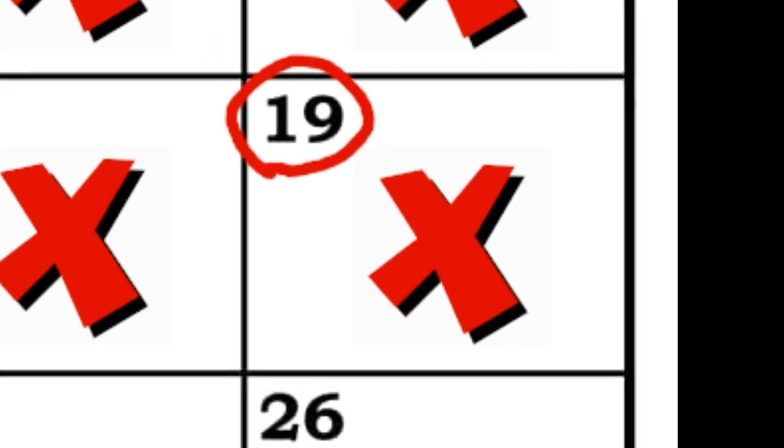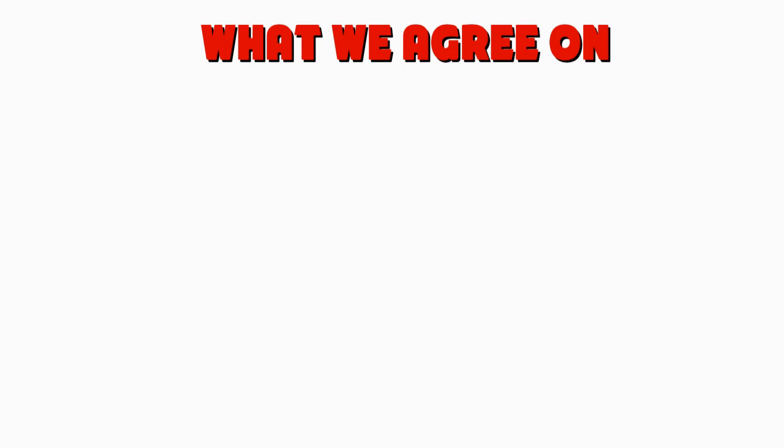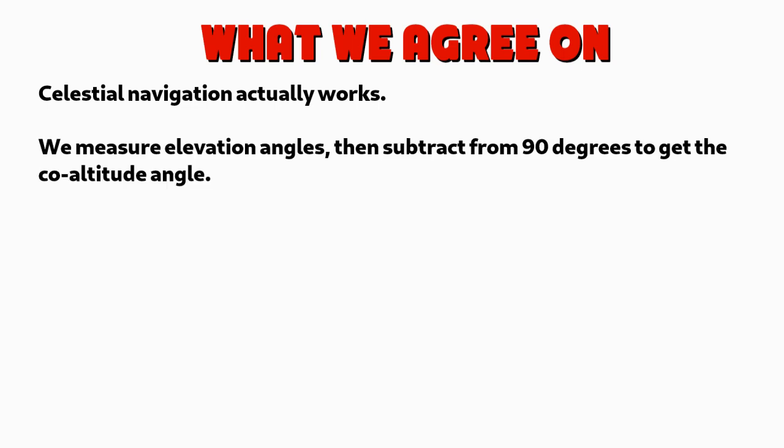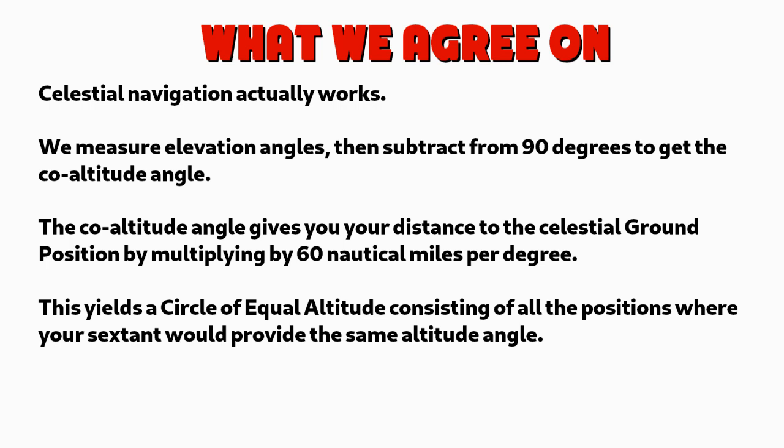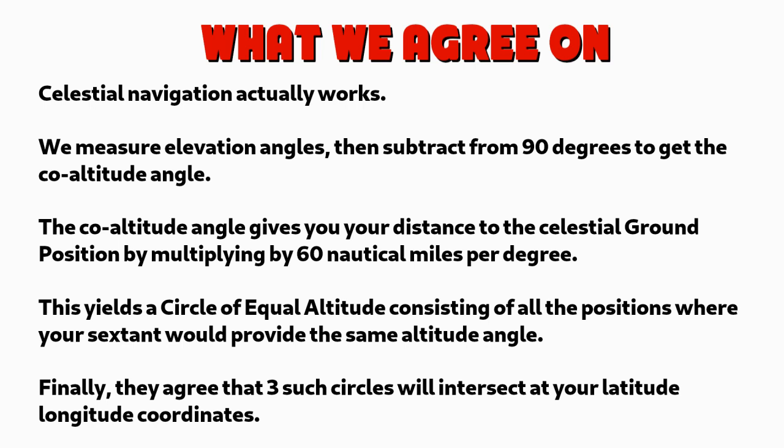They've certainly talked about it a lot and even agree on a few important points. Specifically, that celestial navigation actually works and has been used by mariners successfully for centuries. That it works by obtaining elevation angles to celestial bodies, like the stars, and then subtracting it from 90 degrees to get something called the co-altitude angle. They agree that the co-altitude angle gives you your distance to the celestial ground position, just by multiplying by 60 nautical miles per degree. And that this gives you a so-called circle of equal altitude, consisting of all the positions on the surface of the Earth with the same distance from the ground position, where your sextant would provide the same altitude angle to the given star. Finally, they agree that three such circles will intersect at your latitude-longitude coordinates.